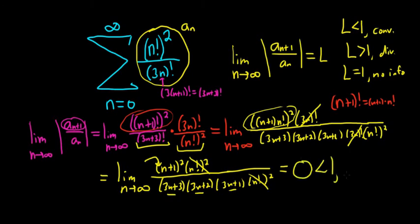That's less than 1, and so we have convergence. So it converges by the ratio test. Kind of a hard problem, a little bit harder than I thought it would be. That's it.